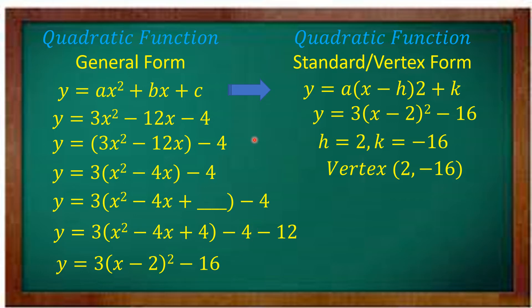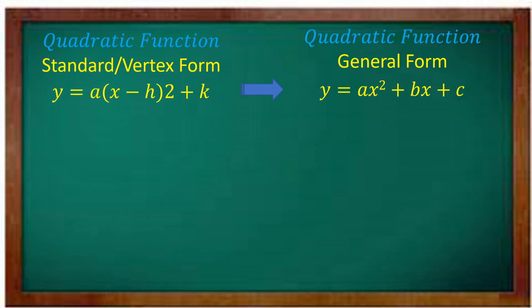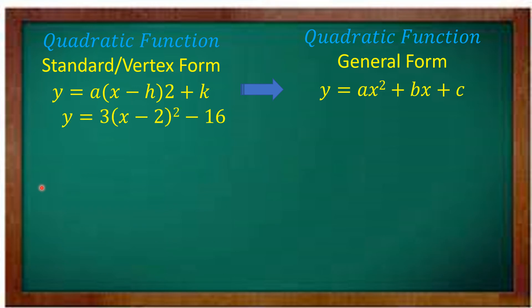Why do we need to transform into vertex form? So we can identify the vertex. Now let's reverse the process: from vertex form or standard form, we will make general form. From y is equal to a, quantity x minus h, squared plus k, we go to y is equal to ax squared plus bx plus c. Our example from earlier: y is equal to 3, quantity x minus 2, squared minus 16.